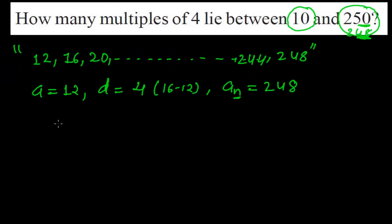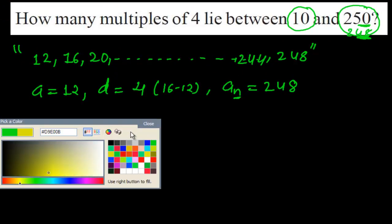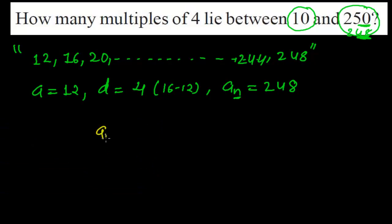Again, I'm using the same formula as usual, like we used to do. That's the nth term formula. a_n equals to a plus (n-1) times common difference. So here a_n, the nth term is 248, and the first term is 12, and (n-1). n is not given, so (n-1) that we need to find out.